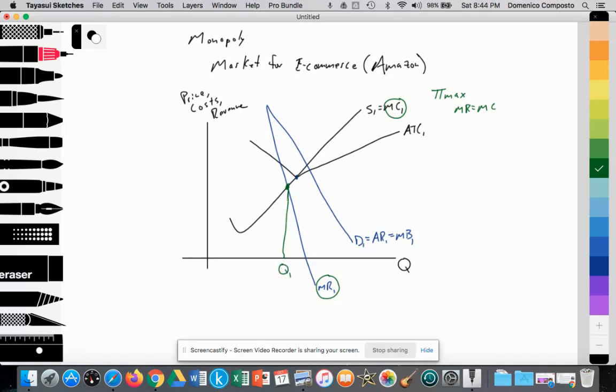Then they will price according to their demand curve, and their demand curve is right here. So they're going to price according to their demand, and they're going to set a fairly high price for their good or service at P1.